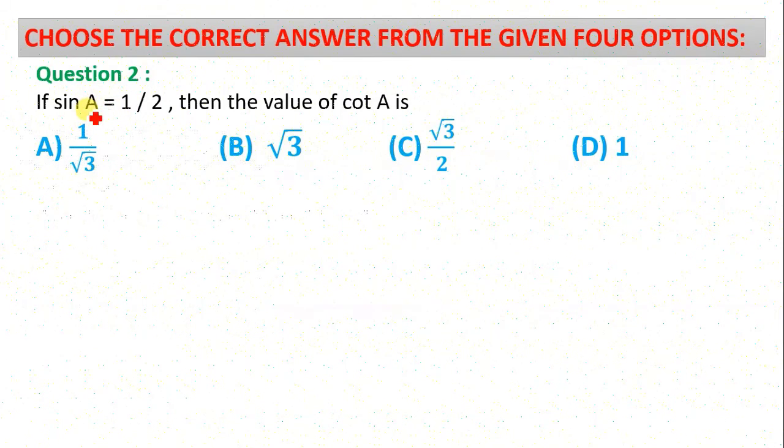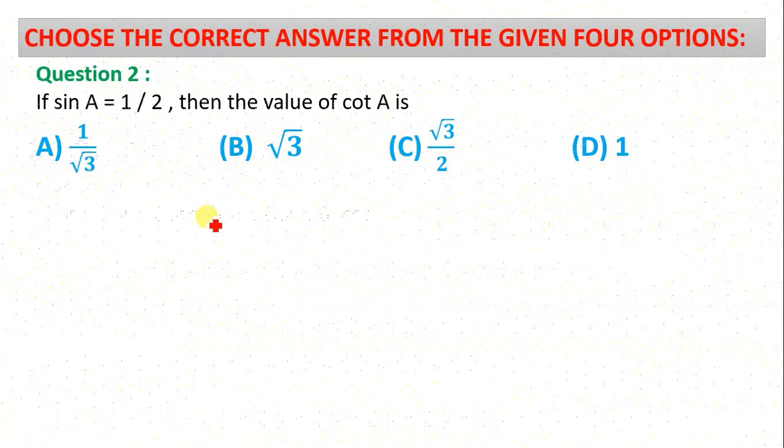If sin A = 1/2, then the angle A is 30°. So if the angle is 30°, then A = 30°.